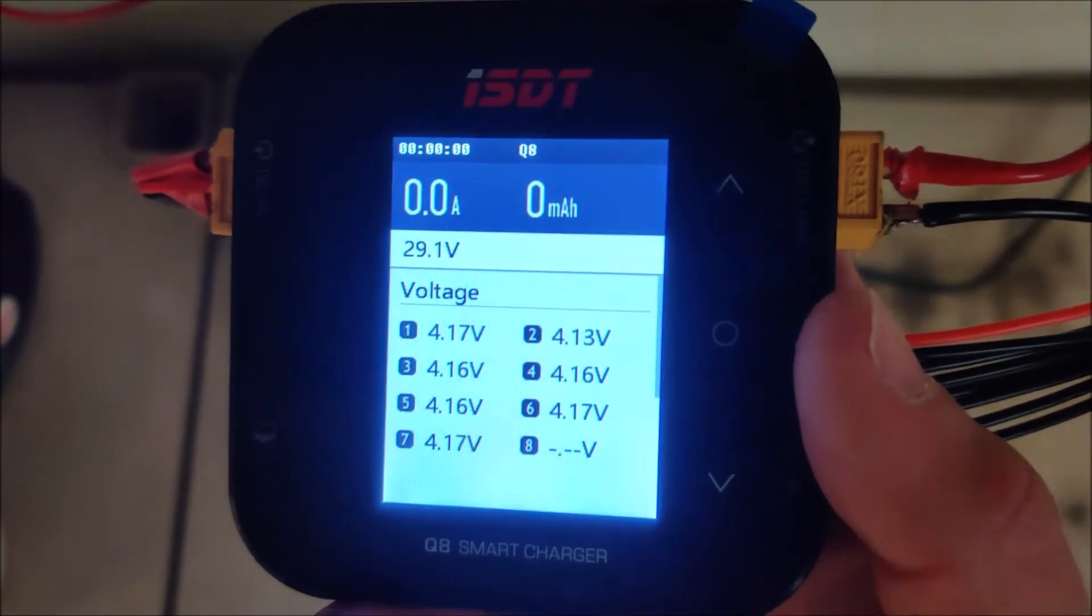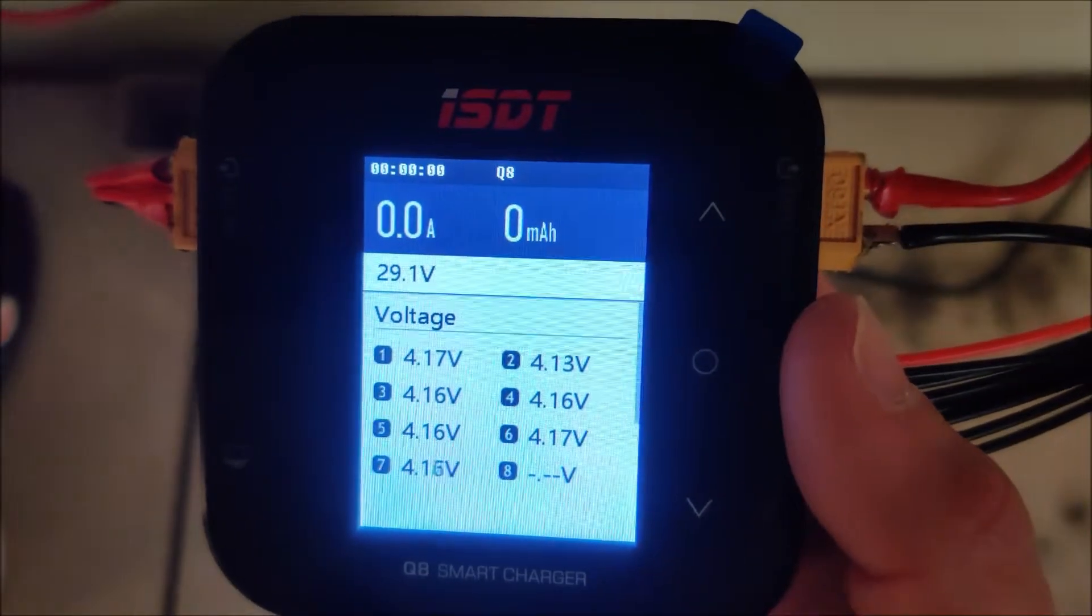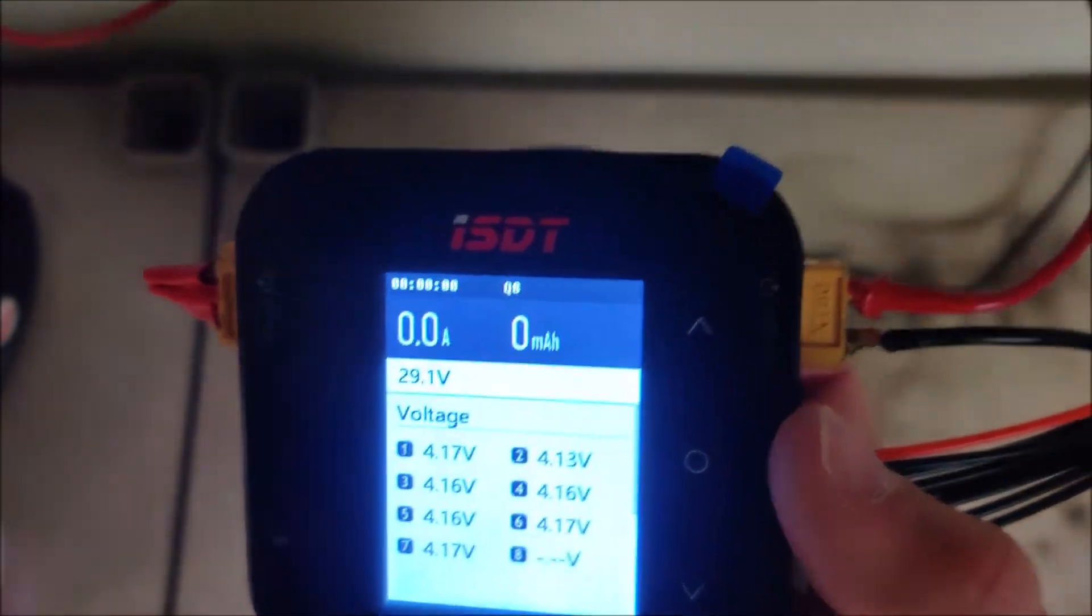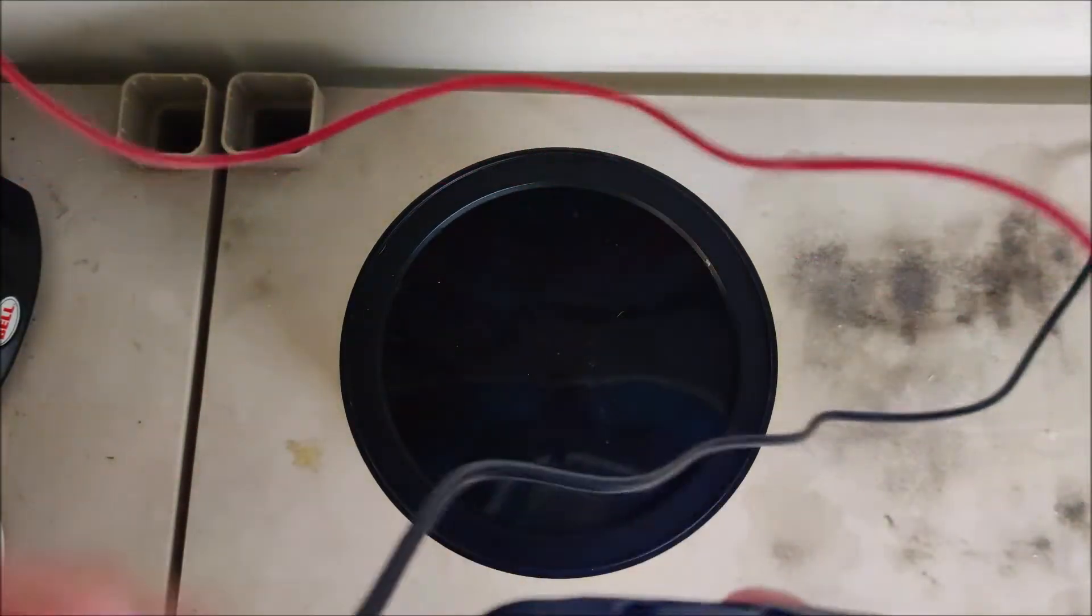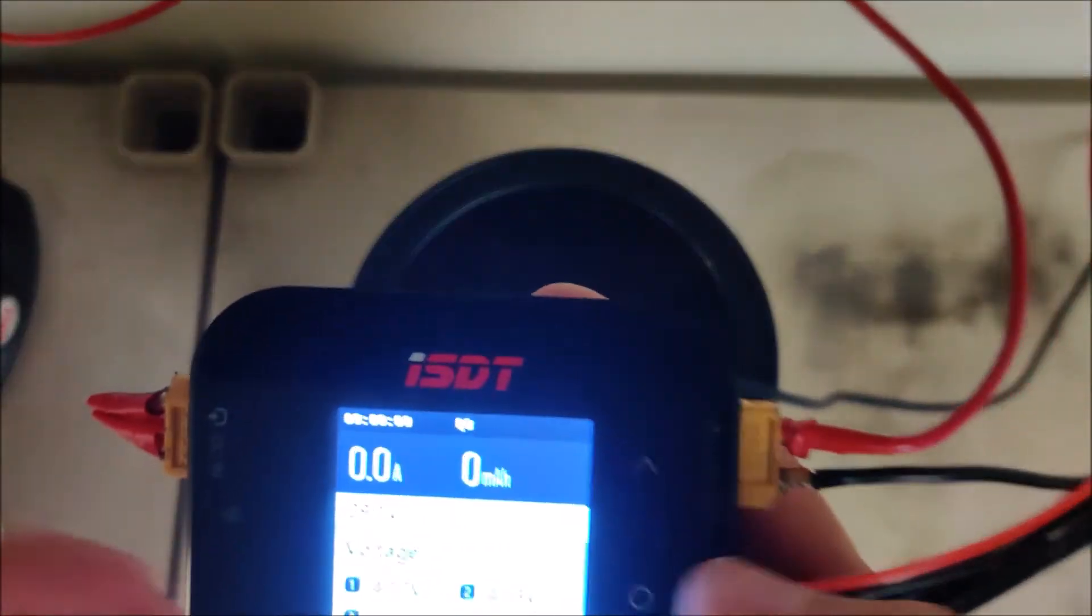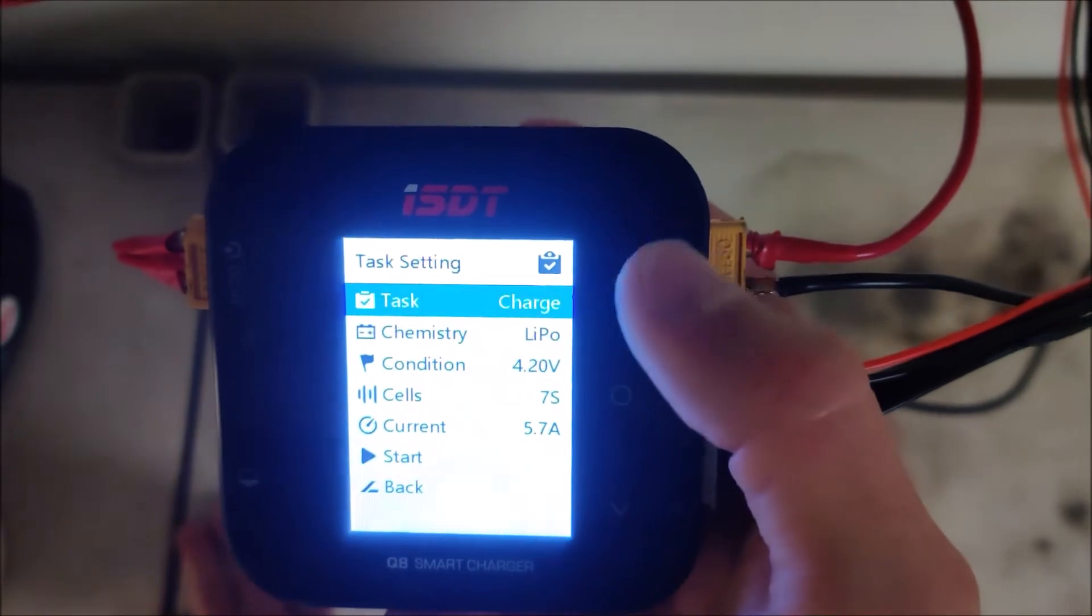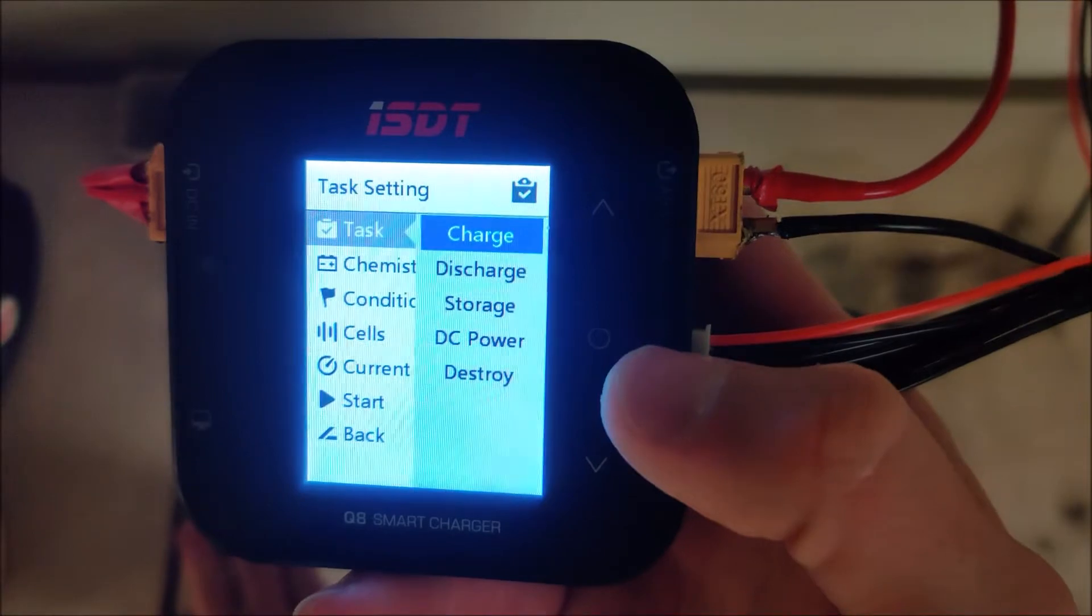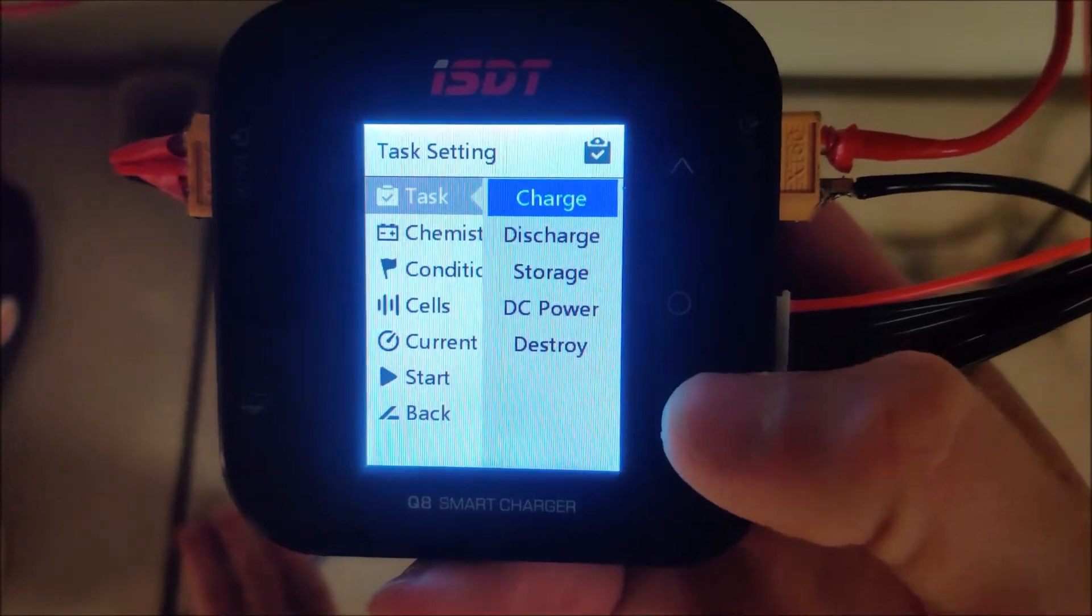I sort of stopped messing with it for a little while, but that's what this device is for. And we can actually use this to do that. Let me peel off the protector. Okay. Don't know if there is a screen on there or not. Okay. Let's go through the, so here it's got some, yep. So let's see what our options are. Charge, discharge, storage, DC power, destroy. Interesting. There are definitely some new options in here that weren't in the T8.